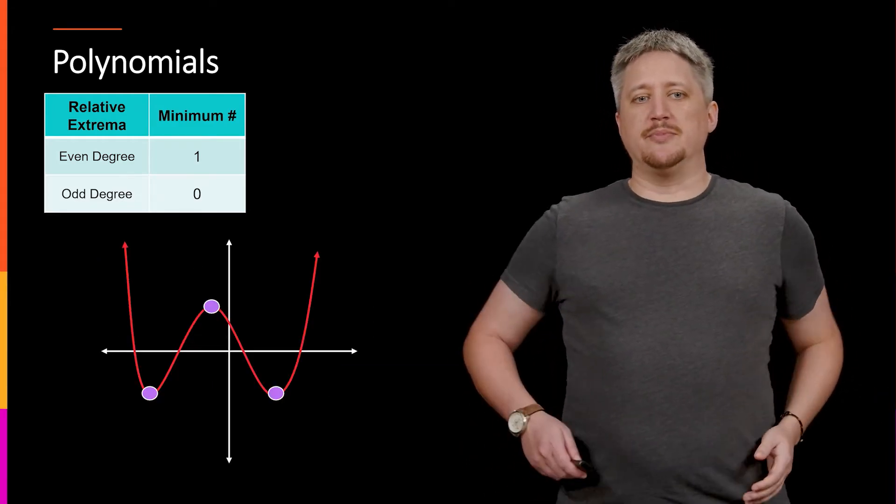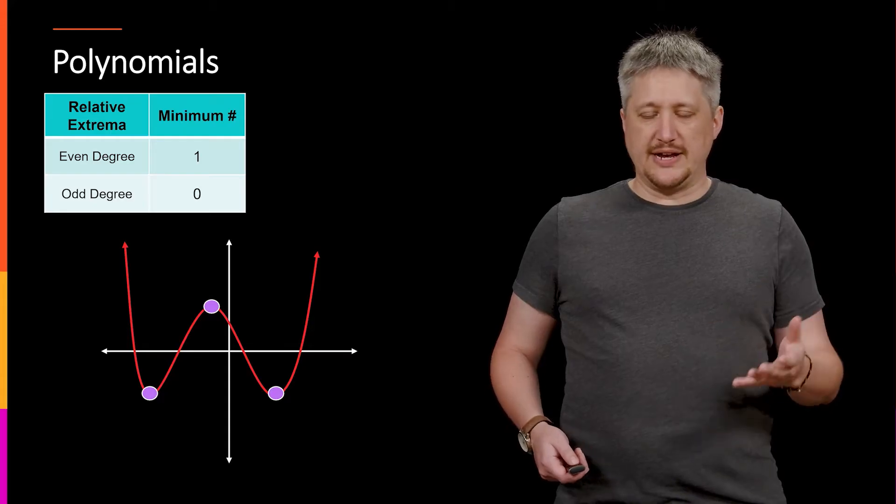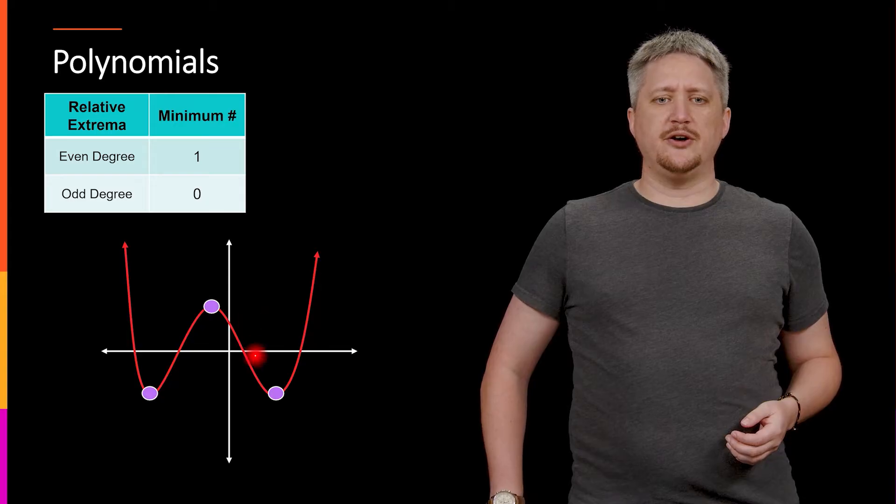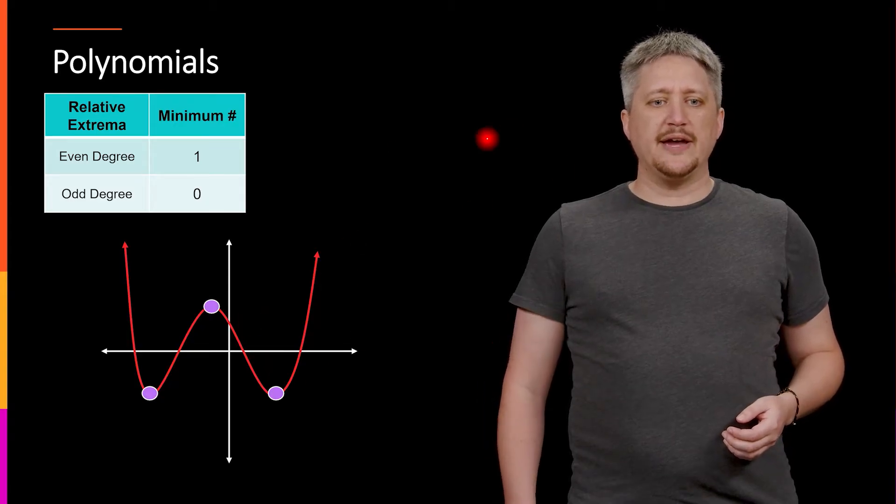What about the maximum number though? So looking at another example here, we can see we have our curve going down, up, down, up. And we have this local min down here, this local min down here,